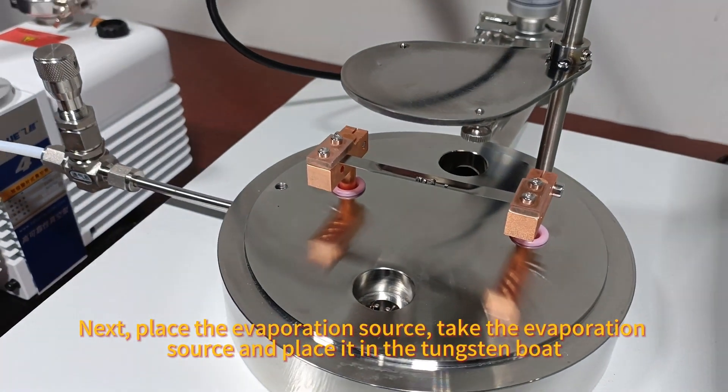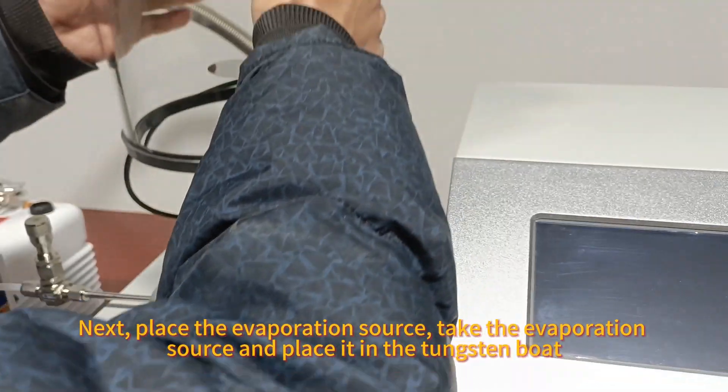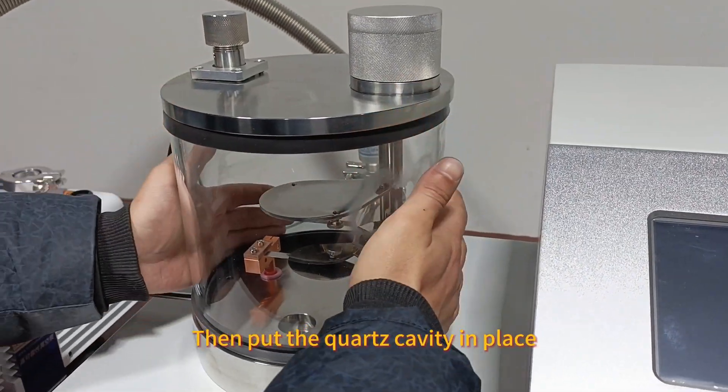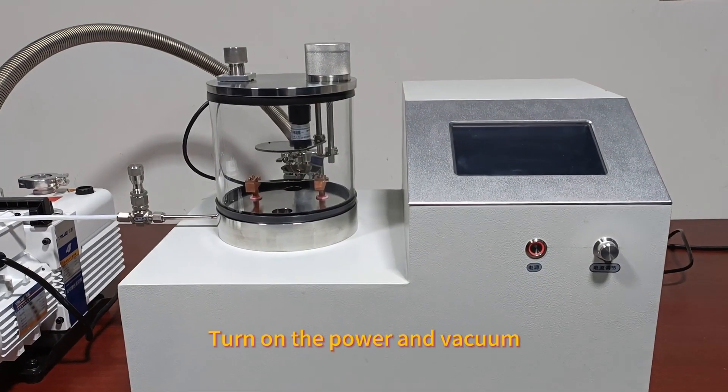Next, place the evaporation source. Take the evaporation source and place it in the tungsten bolt, then put the cross cavity in place. Turn on the power and vacuum.